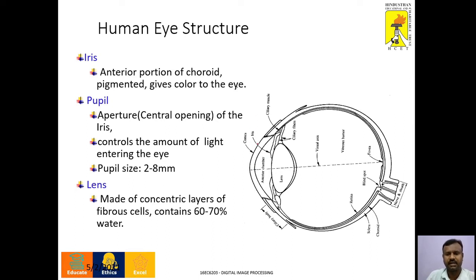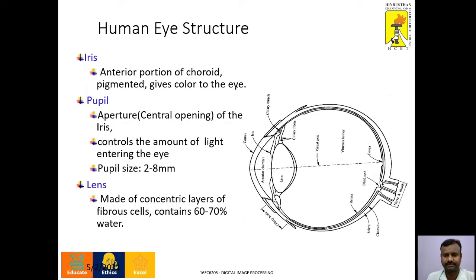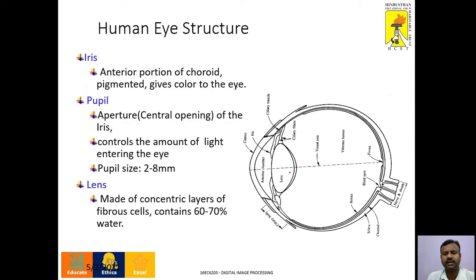Next is the iris, which is a part of the choroid. The iris gives us color pigments — we have different eye colors such as brown, black, green, and blue — all these color pigments are because of the iris. The center opening of the iris is called the pupil, which controls the amount of light entering the eye. Pupil size is around 2 to 8 mm. The lens of the eye is made up of fibrous cells containing 60 to 70 percent water.